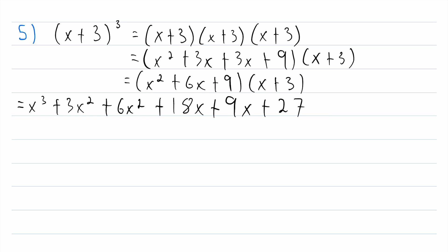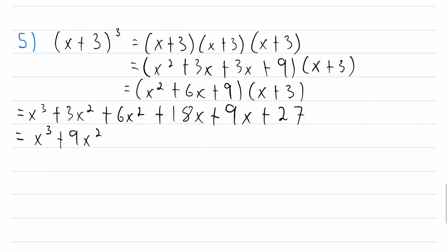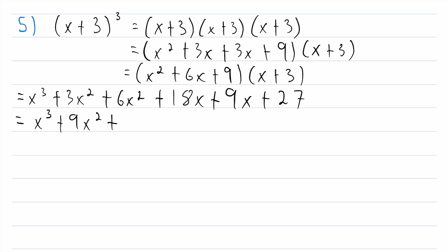Now we just add like terms. We have one x cubed term — bring that down. Two x squared terms: 3x squared and 6x squared combine to give plus 9x squared. Two x terms: 18x and 9x combine to give plus 27x. And one constant at the end, plus 27. So x plus three cubed equals x cubed plus 9x squared plus 27x plus 27.